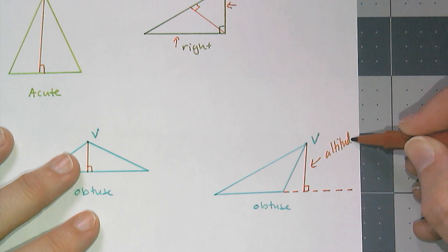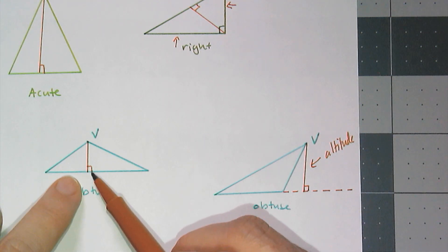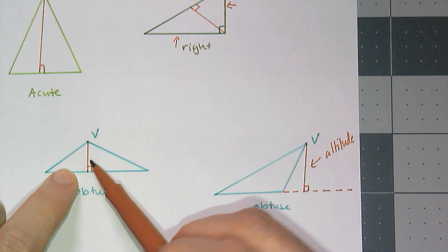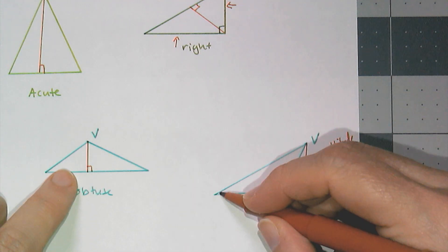And in an obtuse triangle, only one of the altitudes is interior. The other two are going to be exterior.